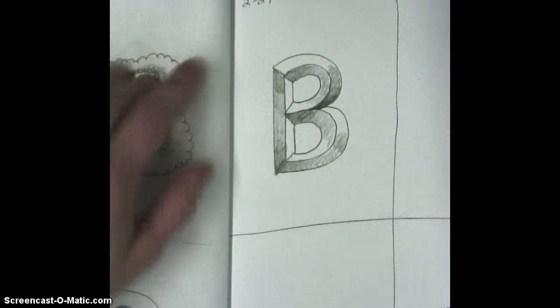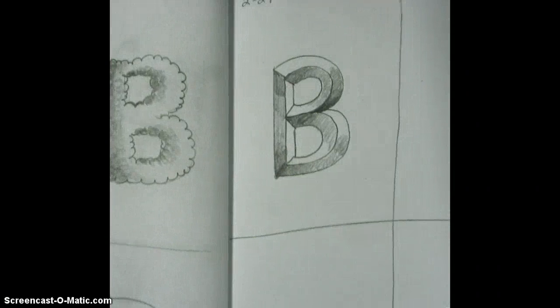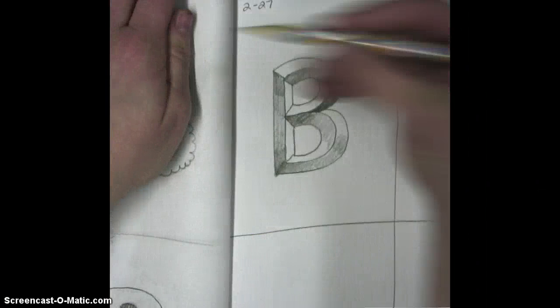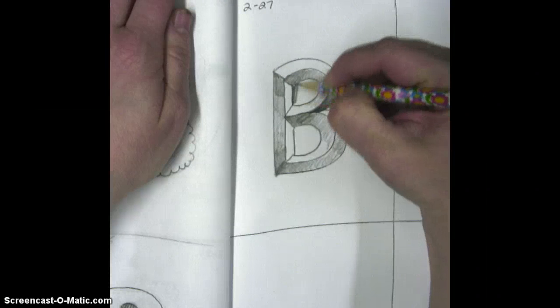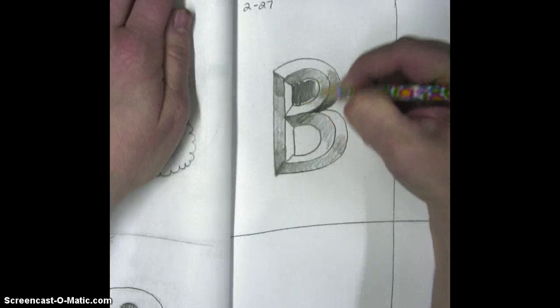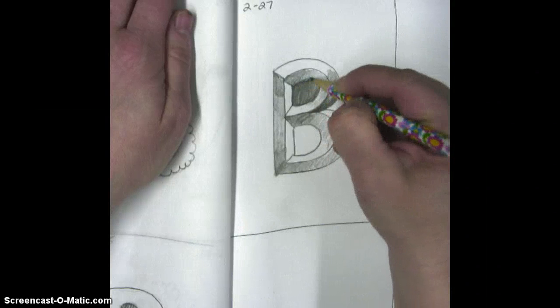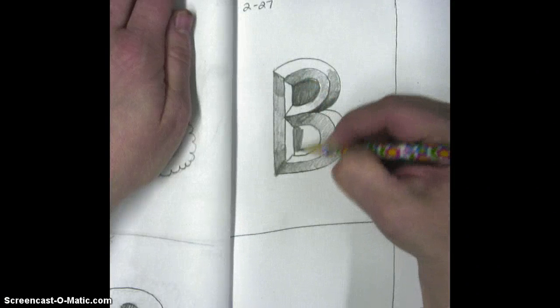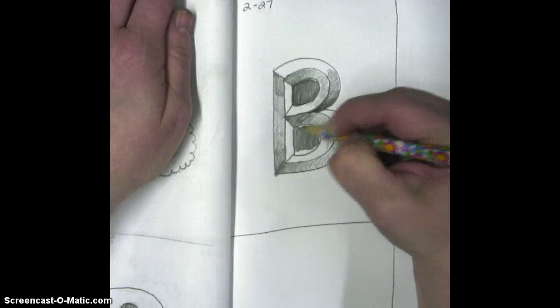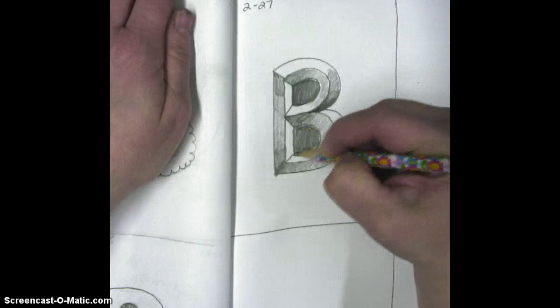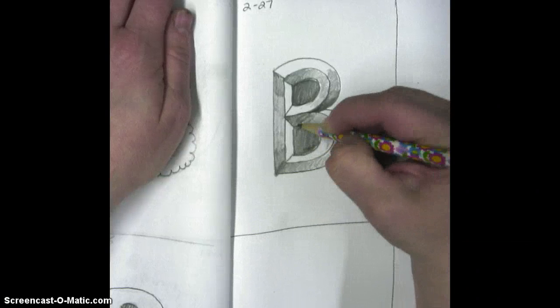So our last step in making this B is going to be to fill it in solid. We're going to do the inside completely solid black. Fill it in nicely. But we're also going to do the one at the bottom. It's a shadow in there.